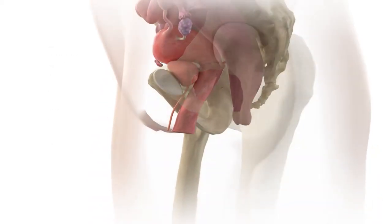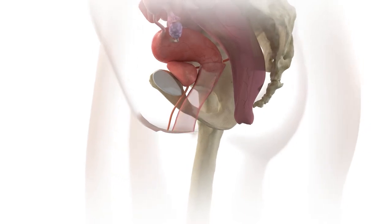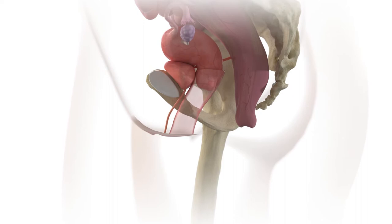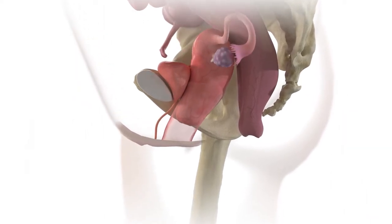Since 1990, Mylex pessaries have been an effective, non-surgical treatment for women with pelvic organ prolapse, offering supportive structure for the uterus, bladder, and rectum.